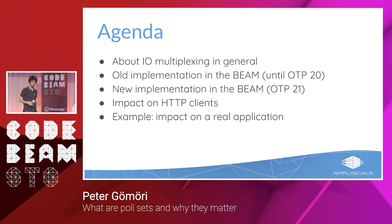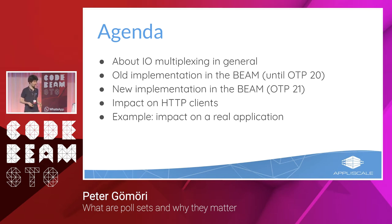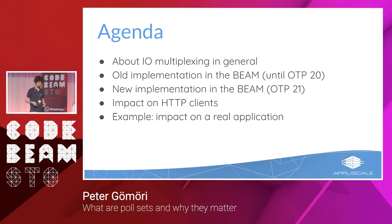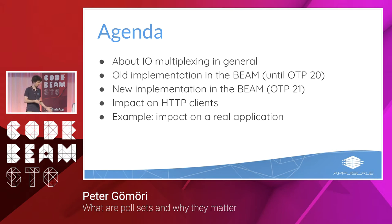But first, let's see the problem domain — what is IO multiplexing in general, not in Erlang, but out there in the world. Then I'll recap what the previous and new implementation in the BEAM were. This was already partly covered by Kenneth Lundin. And we'll also see two examples: how this affects some HTTP client libraries and how it affects our complex application, which also uses one of those HTTP clients.